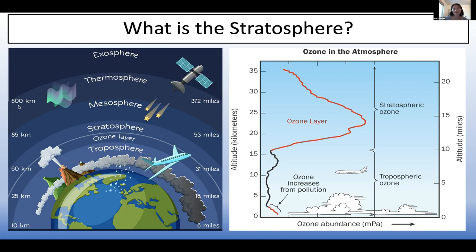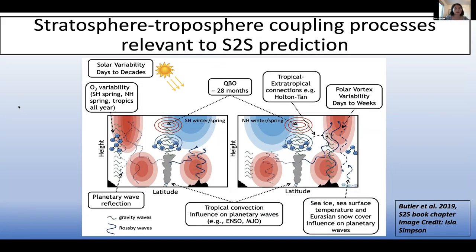I'm going to be focused primarily on dynamics in this talk, not really on chemistry at all, but it's important to remember that ozone interacts with the dynamics. A lot of the S2S prediction models don't really incorporate a lot of those feedbacks, so that's one thing to think about. So what are the stratosphere-troposphere coupling processes that we think might be relevant to S2S prediction?